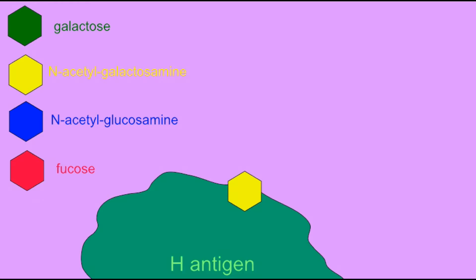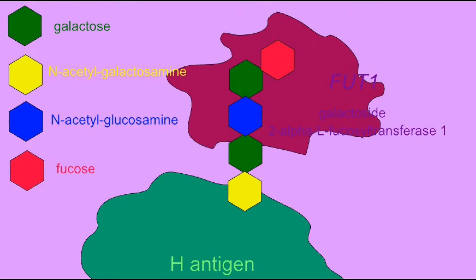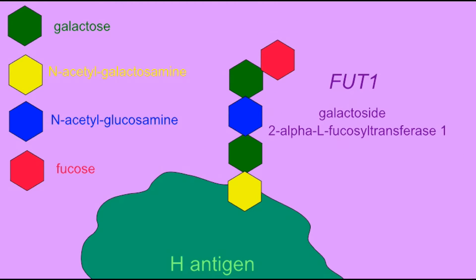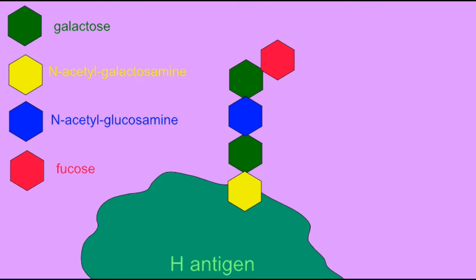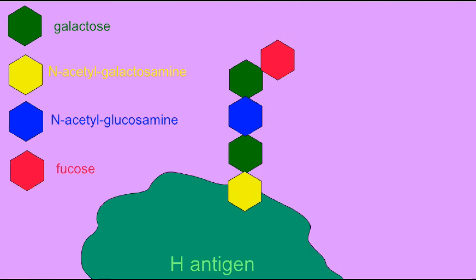Many of the proteins and lipids of the human body, especially those which function on the cell membrane, are actually glycoproteins and glycolipids. They require short chains of sugars known as oligosaccharides in order to function.